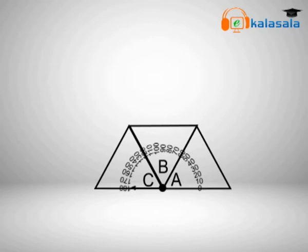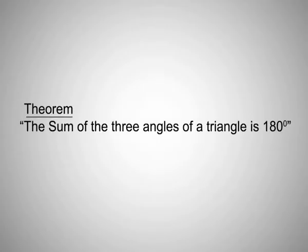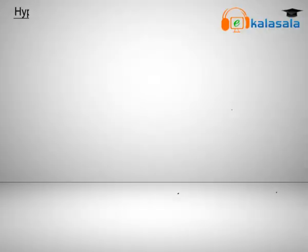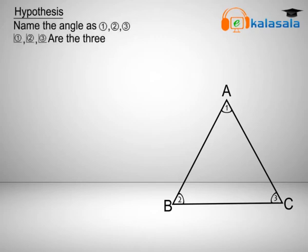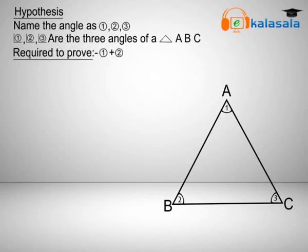This sum of 180 degrees is also called a linear angle. Now, let us prove that the sum of the angles of a triangle is 180 degrees. Take a triangle ABC and name the angles 1, 2, and 3 as shown in the figure. We are required to prove that angle 1 plus angle 2 plus angle 3 equals 180 degrees.